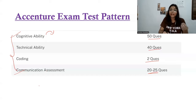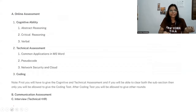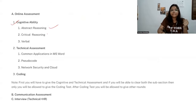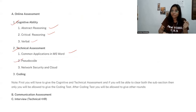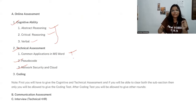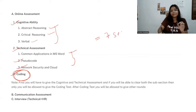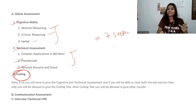In cognitive ability there will be three sections: abstract reasoning, critical reasoning, and verbal ability. In technical assessment there will be: common applications and MS Word, pseudo codes, and network security and cloud. That makes six sections total, plus one coding section — so seven sections altogether.